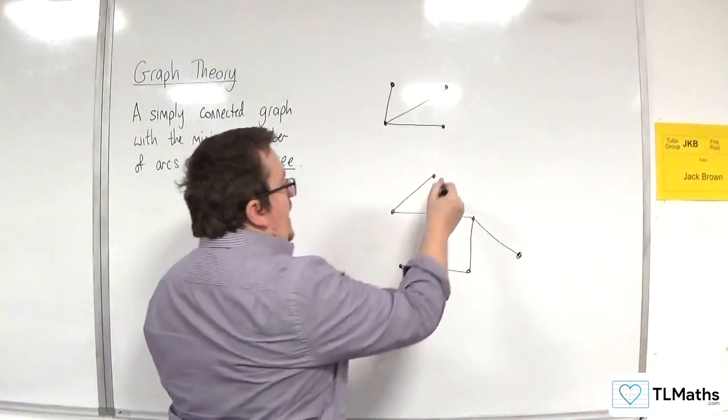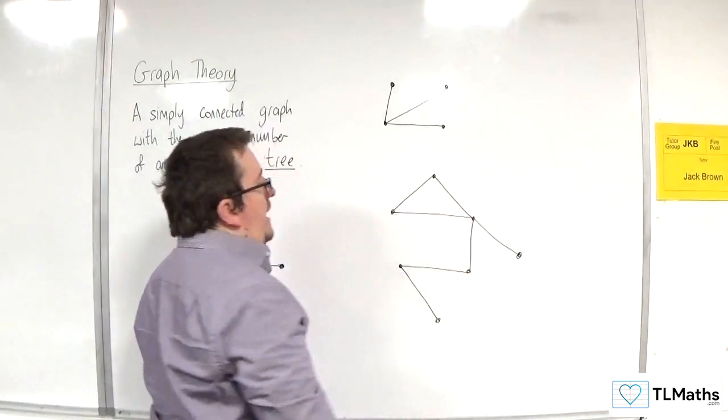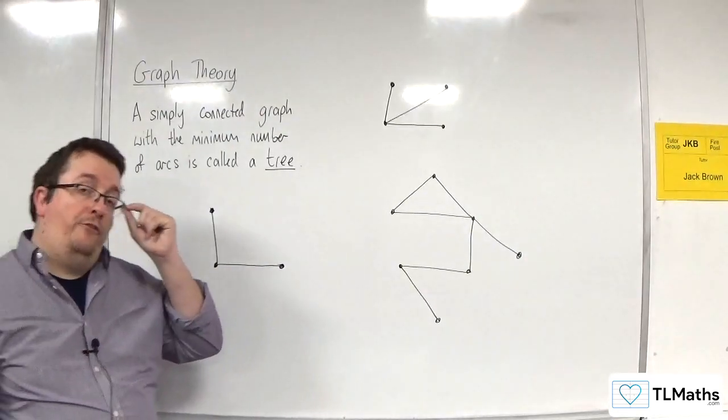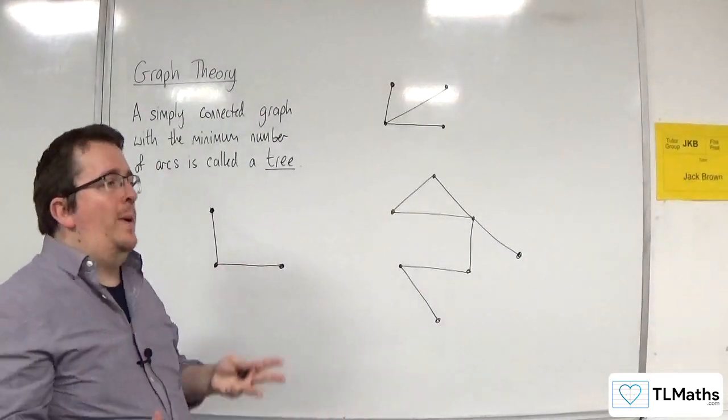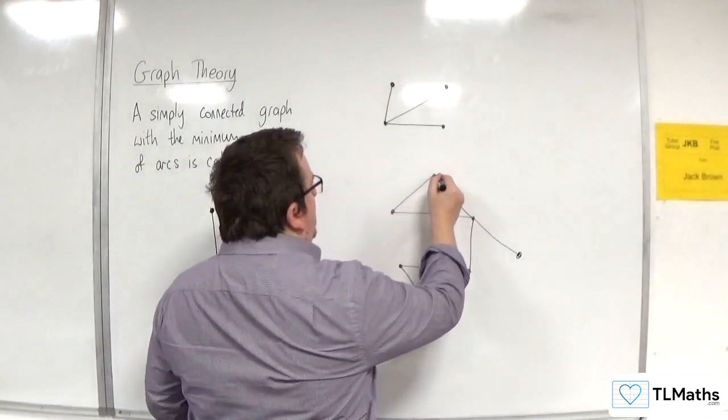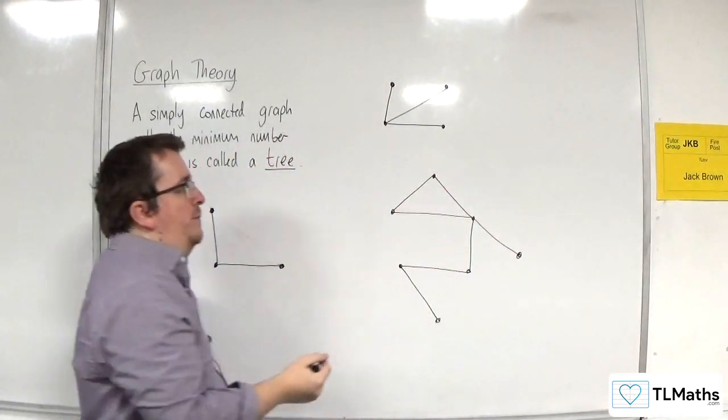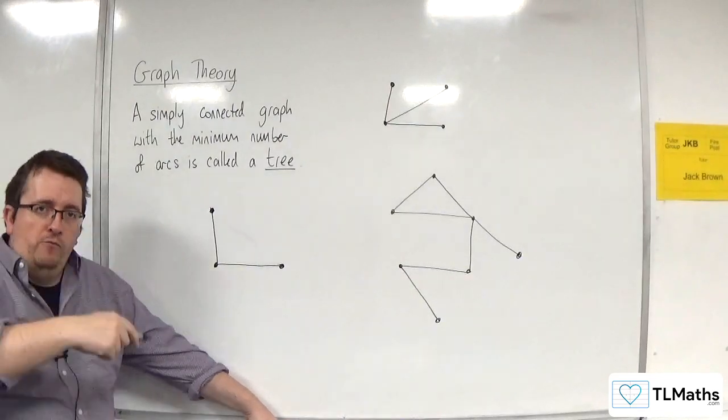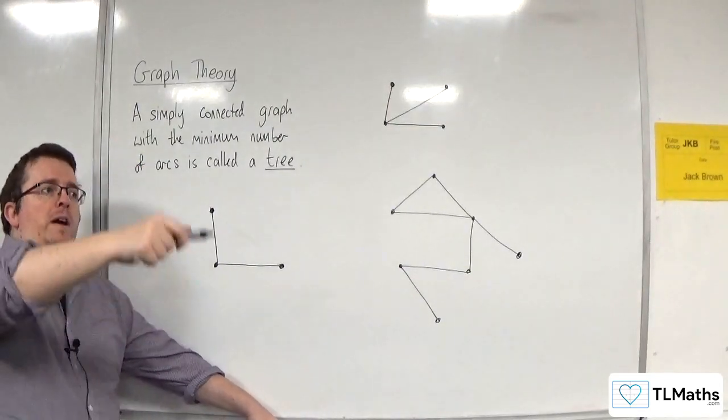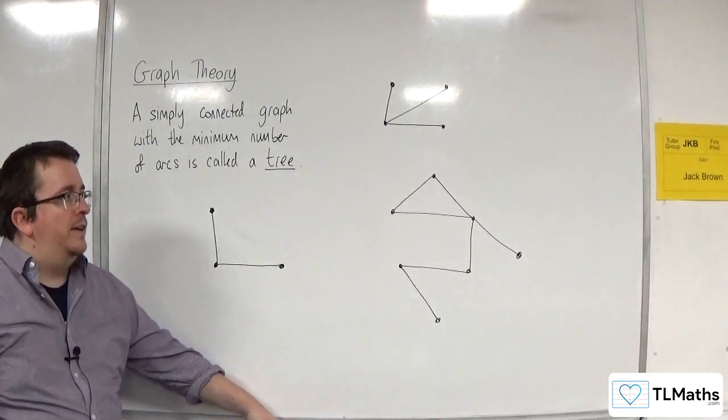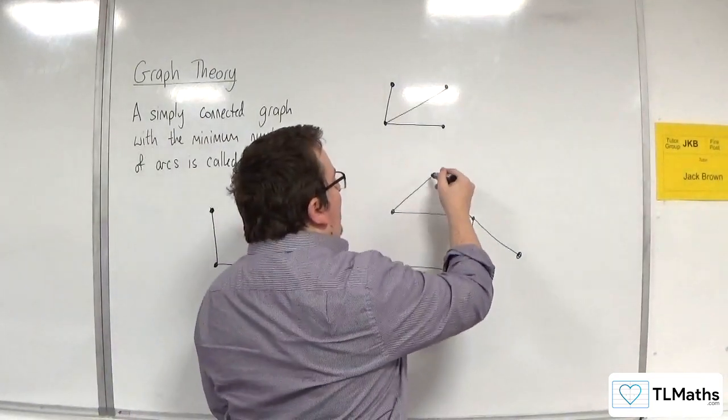The moment that I add in this edge here, what that forms is what's referred to as a cycle. So the fact that you can go round in a connected path like that, so you start at a vertex and can go round and you get back to where you start, this is what's referred to as a cycle.